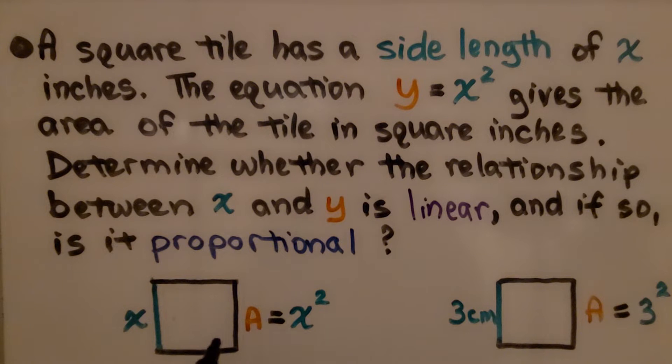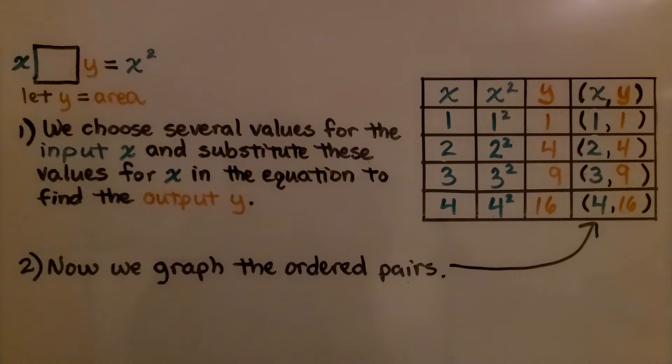The area of a square is side times side. We're going to say the a for area is y. That's why we have y equals x squared. We have a tile, a square tile, with a side length of x. If we multiply this side by this side, and it's a square so all sides are the same, that will have the area of that square. We're going to let y equal area.